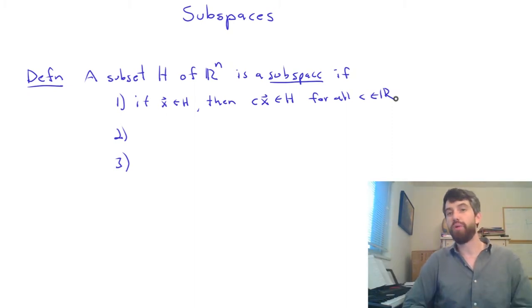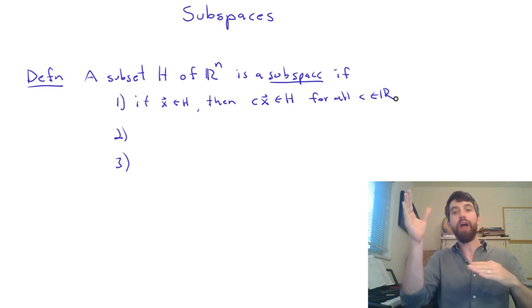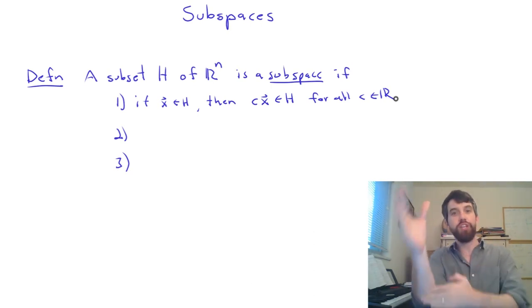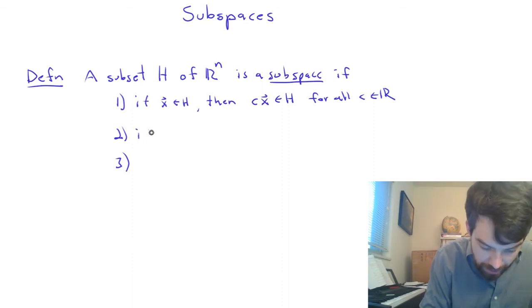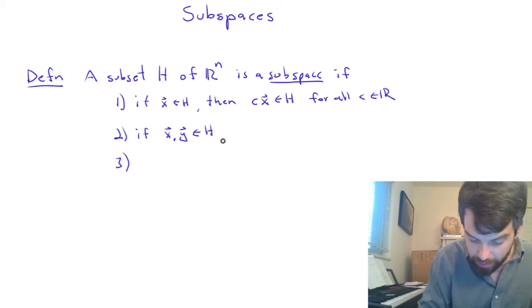The other operation I want to play nicely with is vector addition. In other words, if I've got one vector that's in my subspace and I've got another vector in my subspace, I want that tip to tail addition to also be in my subspace. So I'm going to say if I have two vectors now, it's an x and a y, and they both live in my subspace, then I can take the vector x plus the vector y and it is going to live in my subspace as well.